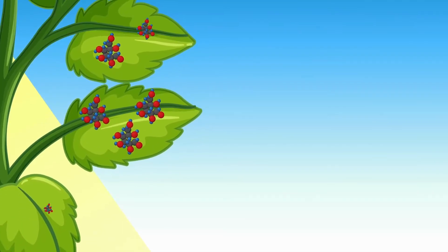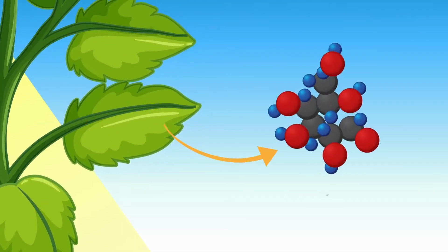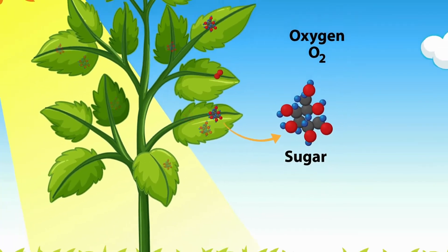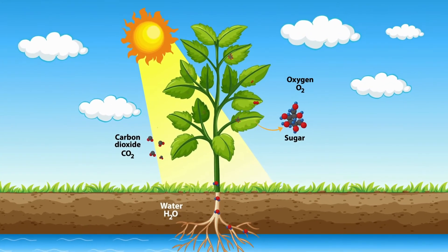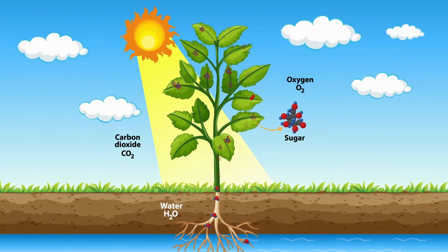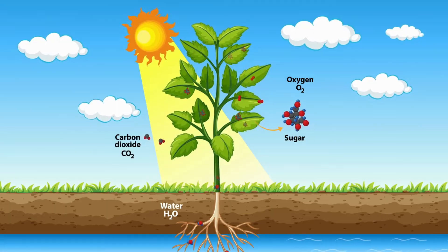The plant also creates glucose, a type of sugar that it uses as food to grow and thrive. Together, sunlight, water, and carbon dioxide fuel photosynthesis, a process that keeps plants alive and helps sustain life on Earth by providing oxygen and food.